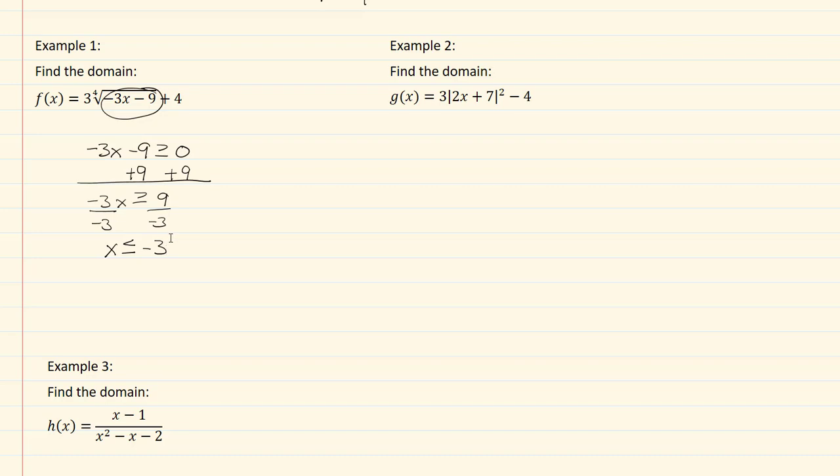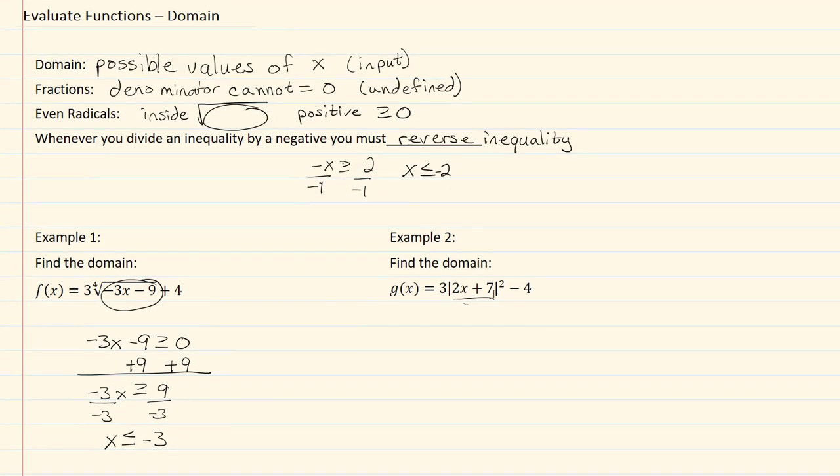In example two, we have an absolute value here, and remember when we were looking at our domains, we had fractions and we had even radicals. There's nothing there about absolute values.